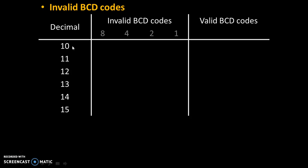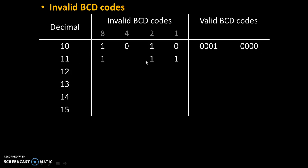In decimal number system, we also have the numbers 10, 11, 12, 13, 14, and 15. We can find BCD codes for these, but those BCD codes will be called invalid BCD codes. So 10 is 8 plus 2, giving binary 1010, but this is not called a BCD code — it is the binary code of 10. The valid BCD code for 10 is the code for 1 (0001) followed by the code for 0 (0000). For 11, the binary is 1011 which is invalid BCD, but its valid BCD code is the code for 1 and the code for 1.